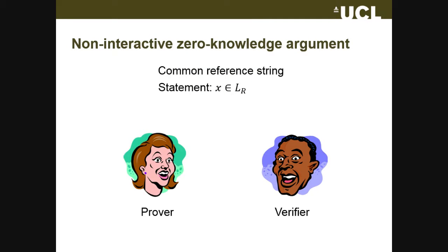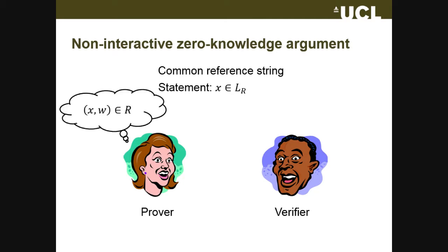I'm going to talk about non-interactive zero knowledge proofs. The idea is that we have a common reference string. The prover makes some statement that X belongs to a particular language, and holds a witness that X really is in the relation defining the NP language. The prover then creates a proof, sends it to the verifier, and the verifier checks it.